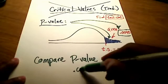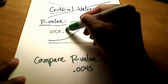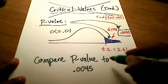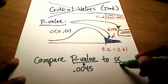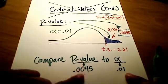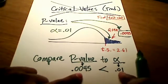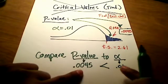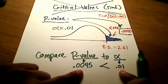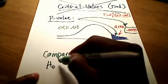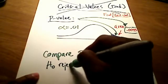In our case, we have a p-value of 0.0045. Let's say we had an alpha of 0.01. Our p-value is less than 0.01. There's a phrase that goes along with this: if the p-value is low — lower than my alpha, my level of significance — then the null must go. So we're going to take the null hypothesis and reject it.